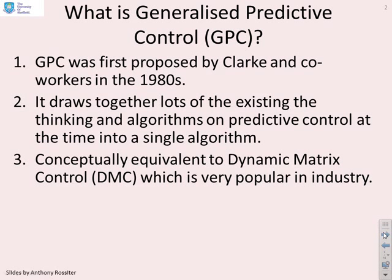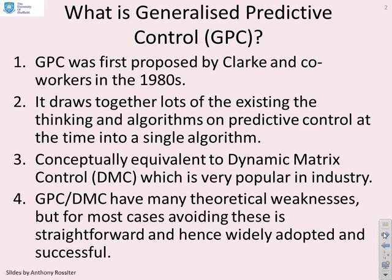In fact, it's probably still the most commonly used algorithm within industry. Now, GPC or DMC have many theoretical weaknesses but, and this is important, for most cases avoiding these is straightforward and that's why they've been so successfully used in industry.